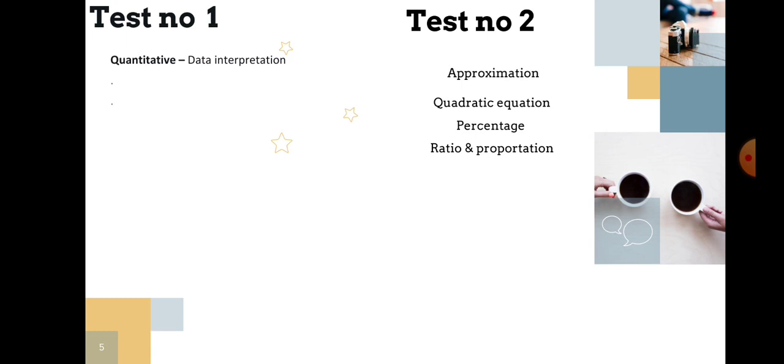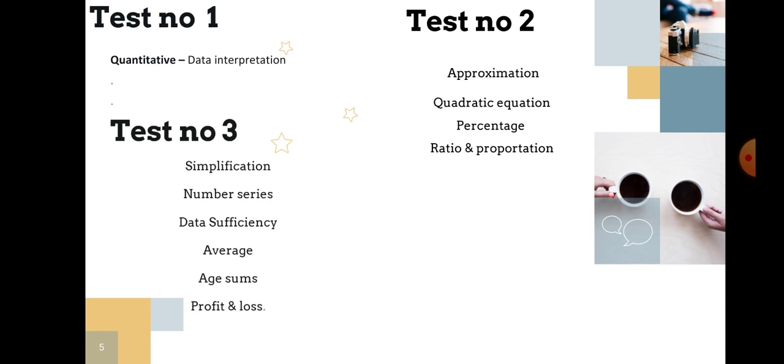Quantitative test number two: approximation, quadratic equation, percentage, ratio and proportion - 100 questions. Test number three: simplification, number series, data sufficiency, average, age sums, profit and loss - 100 questions. Test number four: miscellaneous sums like time and work, train sums, boat sums, simple interest, compound interest, etc. - total 100 questions.